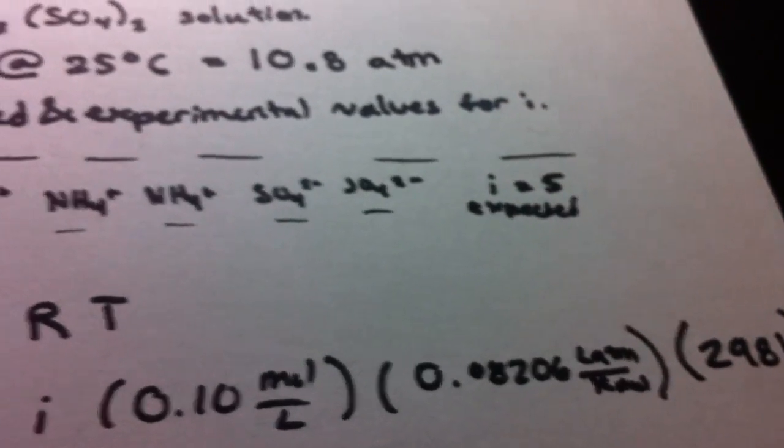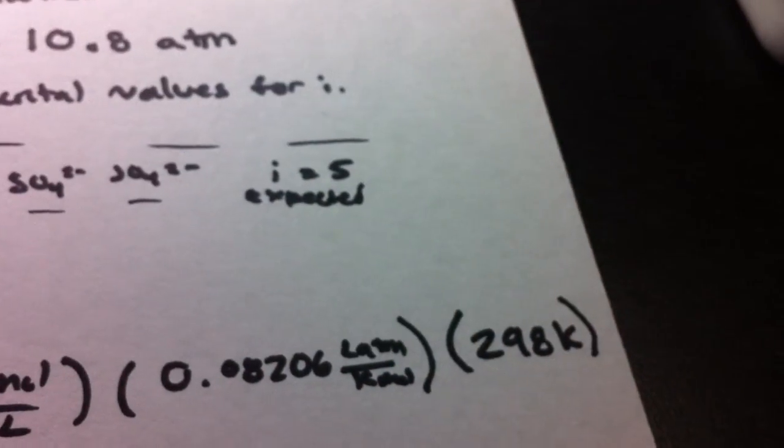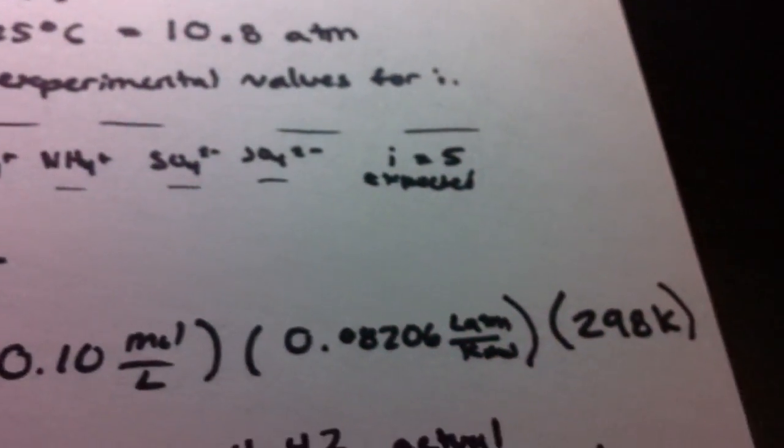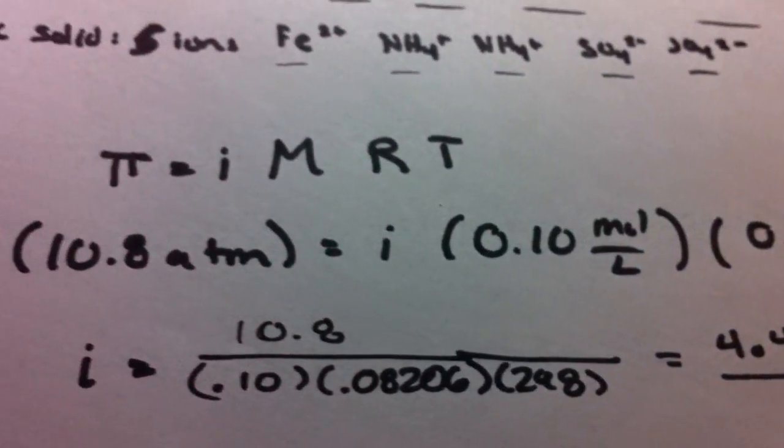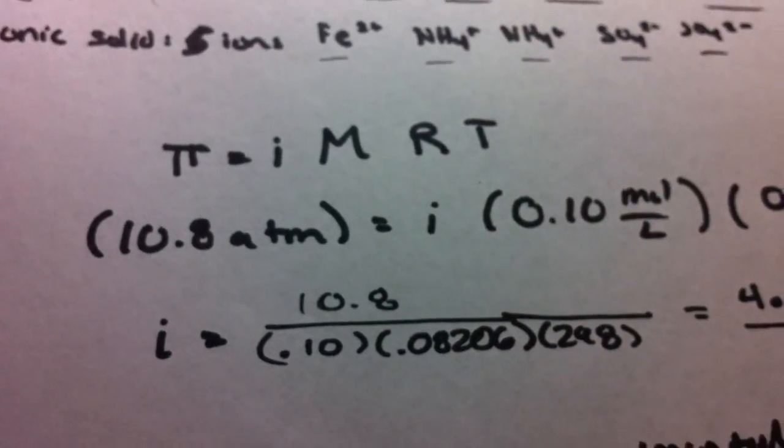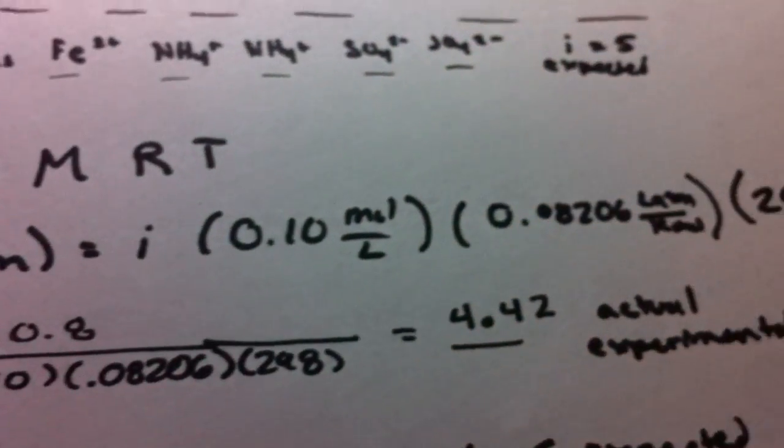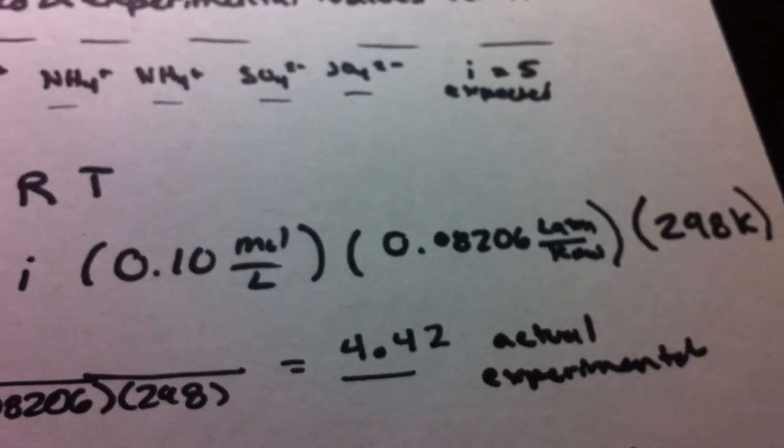For the gas constant, that's a given. And T is just 25 plus 273.15, or just 273. So we just reorganize everything and try to find i. I equals 4.42.